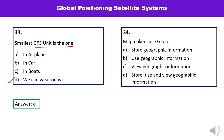Question number thirty-four, the last question: Mapmakers use GIS to — store geographic information, use geographic information, view geographic information, or store, use, and view geographic information? Mapmakers use GIS to store, use, and view geographic information, so the correct answer is D. All three functions need to be performed.